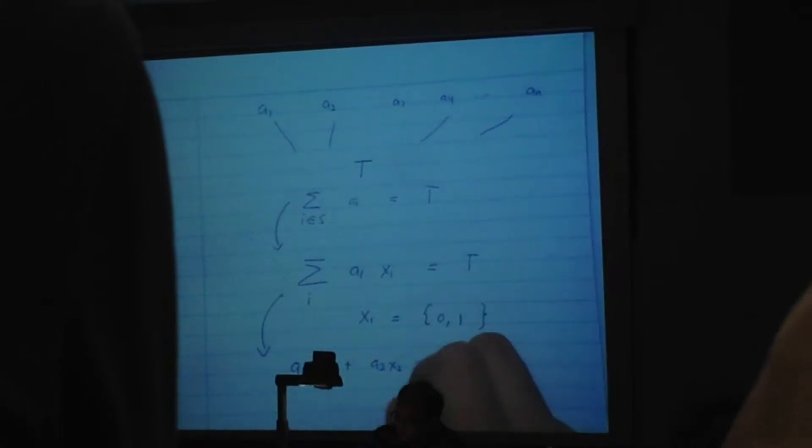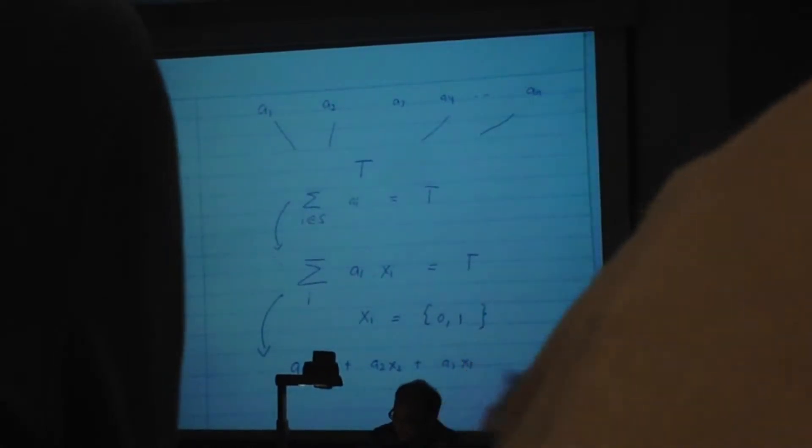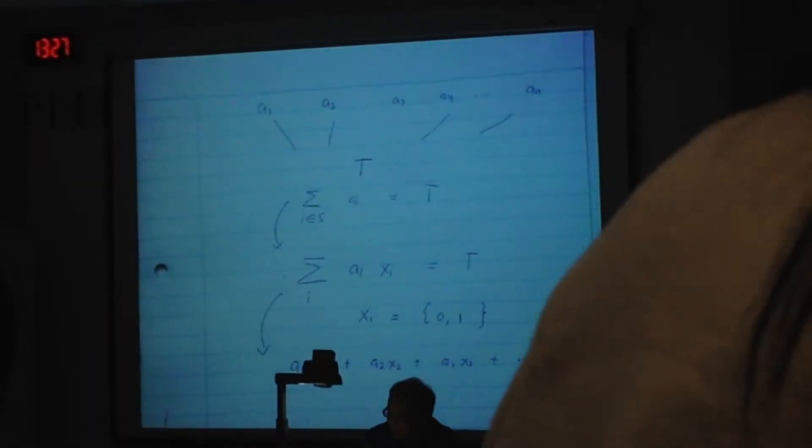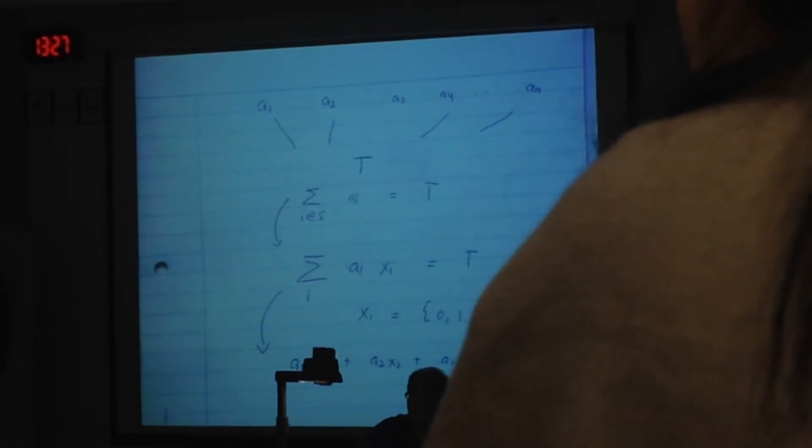So in other words, what does this mean? This means A1*X1 plus A2*X2 plus A3*X3 up to A7. You can see that if X_I is 1, that means, for example, if this one is 1, you will get A1.